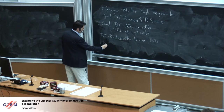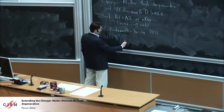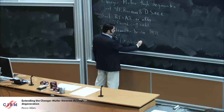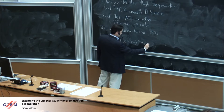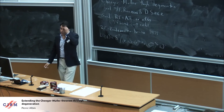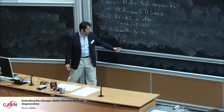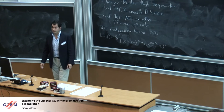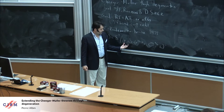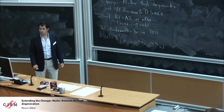Lens spaces are quotients of S³ where you identify two points if they're related in a certain way. You have two integers P and Q that are co-prime. You have a primitive P-th root of unity, and you think of S³ as sitting inside ℂ², the complex plane. You act by a primitive P-th root of unity on the first factor and by the Q-th power on the second factor.